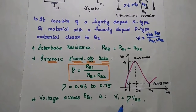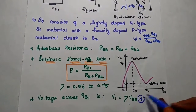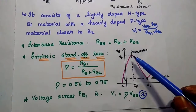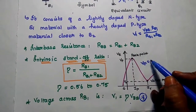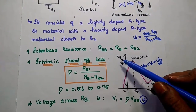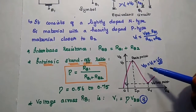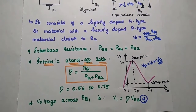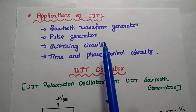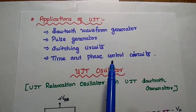The voltage across RB1 is V1 equal to eta times VBB — this is an important value. This is the characteristics of UJT. It has a peak point. This peak point is VP equal to V1 plus VD, where VD is the cut-in voltage of the diode. Whenever the emitter voltage is greater than this peak voltage, the UJT can start conducting. UJT can be used as a sawtooth waveform generator, pulse generator, switching circuits, and time and phase control circuits.